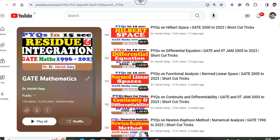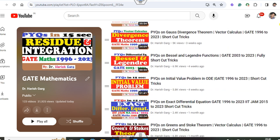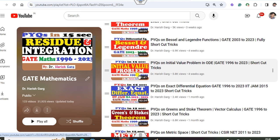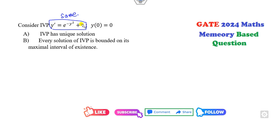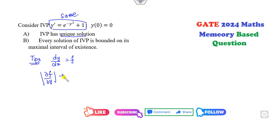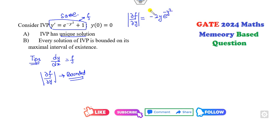Now, this same type of question appears in my lecture on the initial value problem. The shortcut: whenever you have a differential equation, to check for a unique solution, verify if ∂f/∂y is bounded. Here, ∂f/∂y = −2ye^(−y²), and the modulus is 2y / e^(y²).